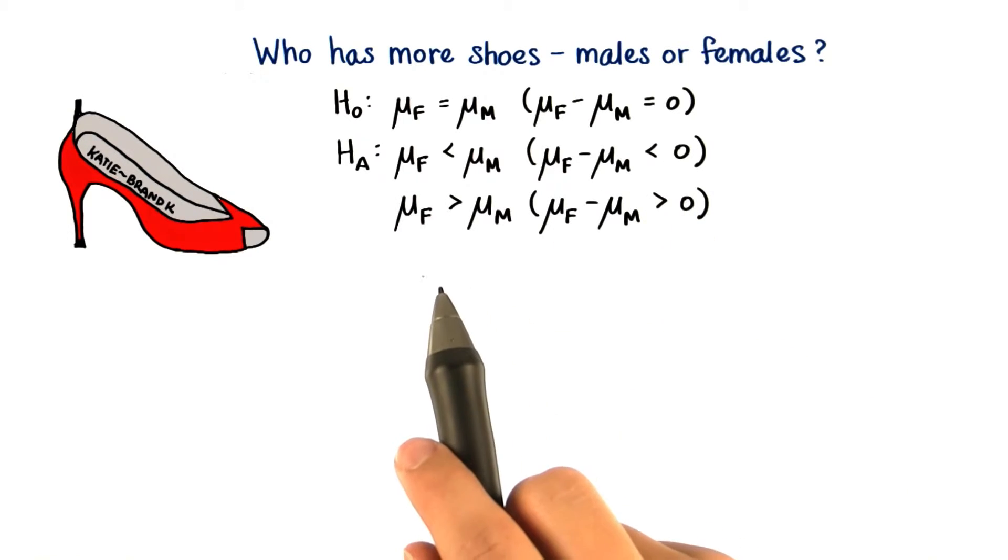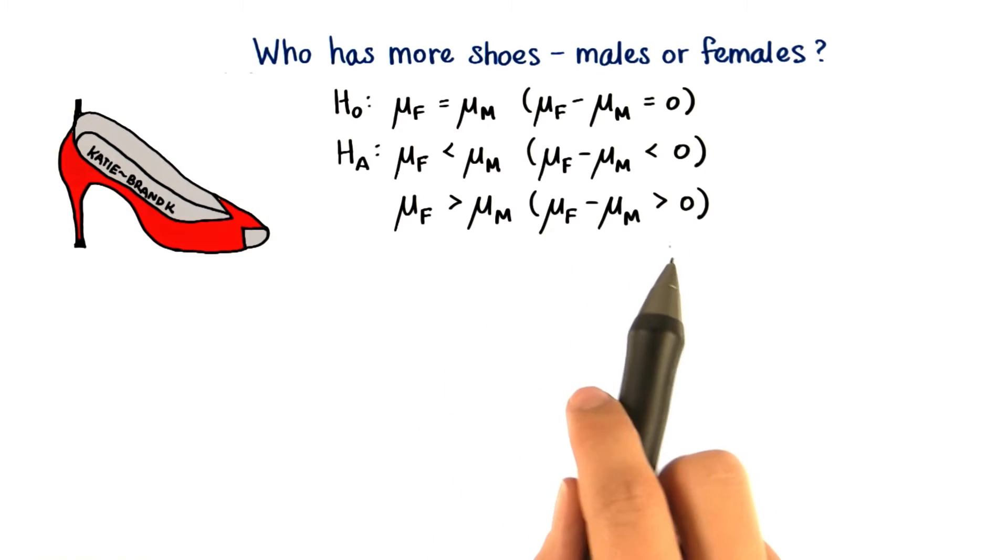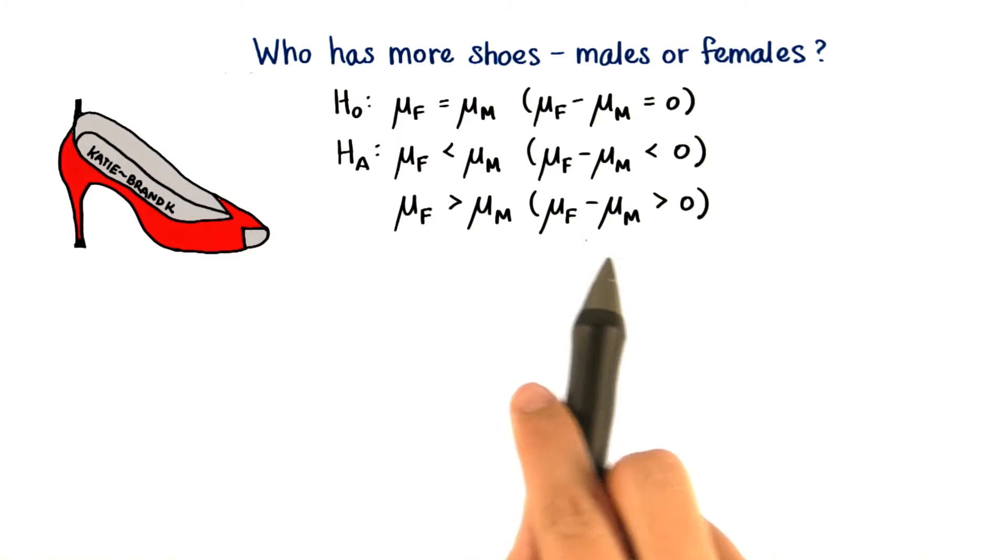Or maybe we think that females own more pairs of shoes than males. In which case the difference will be positive if we go in this direction for the subtraction.